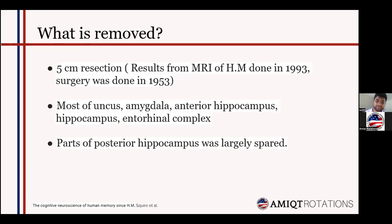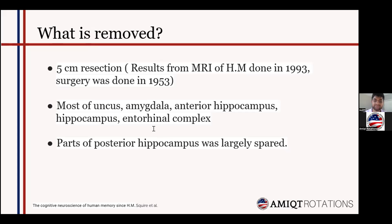In the procedure, a seahorse-shaped resection of around five centimeters was performed. This five-centimeter resection is based on MRI results from 1993, though the surgery was done earlier in 1953. The 1993 MRI showed that most of the uncus, amygdala, anterior hippocampus, hippocampus, and entorhinal complex was removed. However, parts of the posterior hippocampus were largely spared.